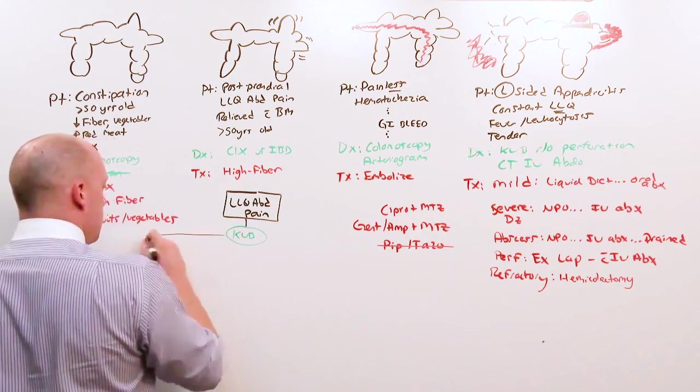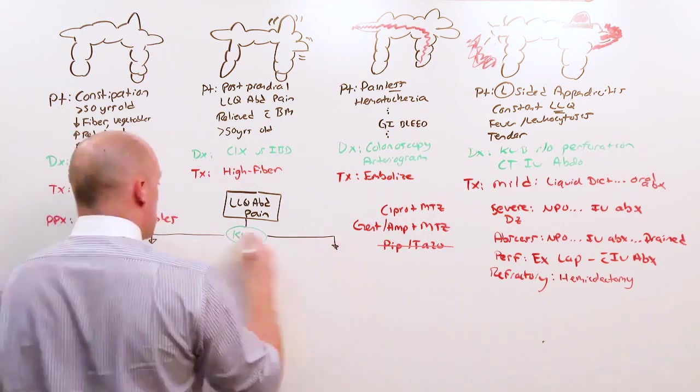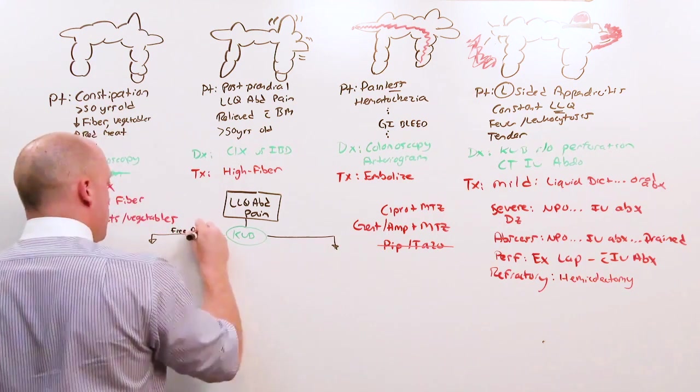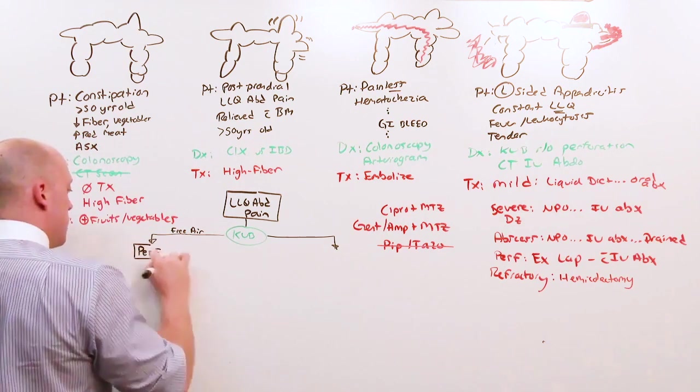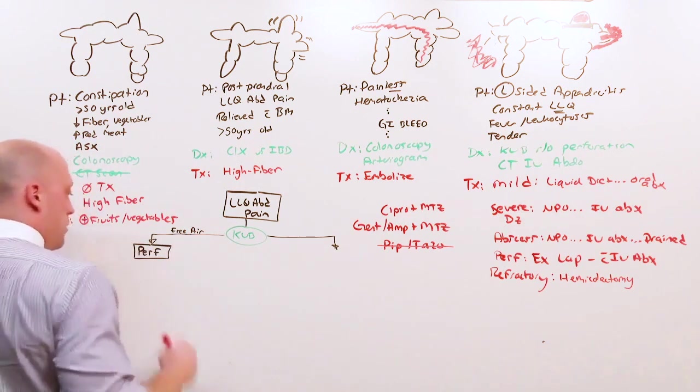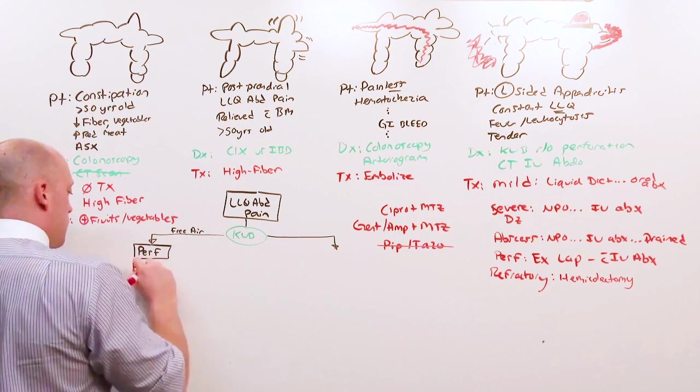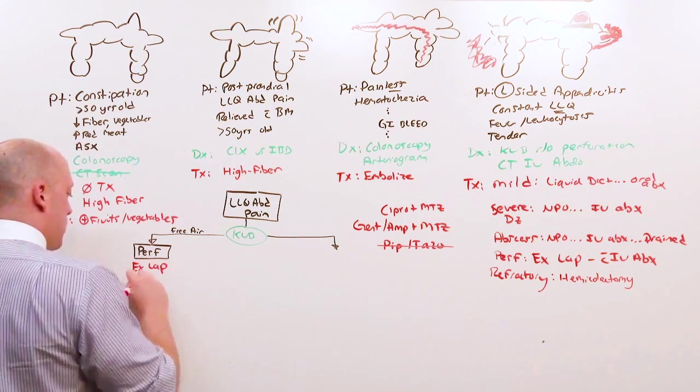You will either see that this person has free air, and that's a perforation. It doesn't matter that they've got diverticulitis, they're perforated, they need an exploratory laparotomy, and you go to surgery with IV antibiotics.